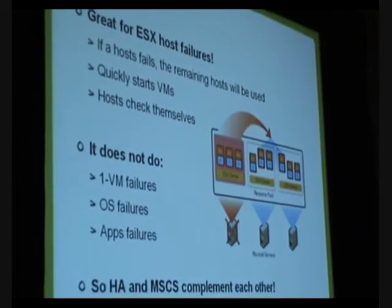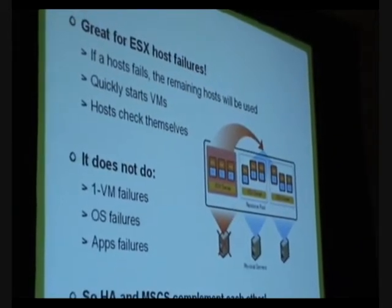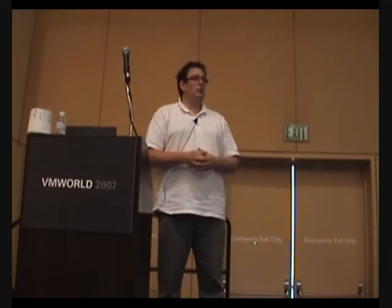So what is it? At the moment an ESX host fails, all VMs will be started on the other host — all hosts are checking themselves and other hosts to make sure all virtual machines are running. But one of the downsides of HA is that single VM failures won't be addressed. So if a virtual machine crashes, or you get a blue screen, or application failures — HA won't do anything about that. That's why you could use Microsoft clustering to address those failures.